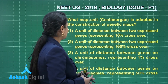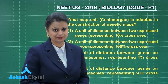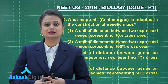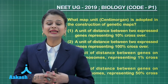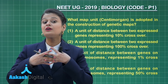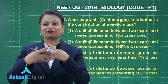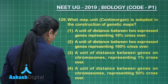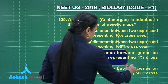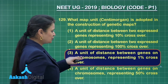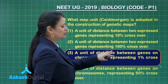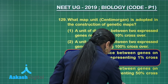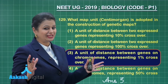Question 129: what map unit — centimorgan — is used in the construction of genetic maps? According to Sturtevant, one map unit represents one percent crossover between loci on the chromosome. He dedicated this unit of distance on the chromosome to his professor Morgan, so it is known as centimorgan. The right answer is option number three — a unit of distance between genes on a chromosome representing one percent crossover.